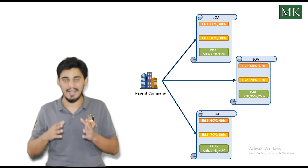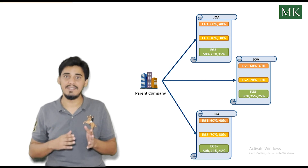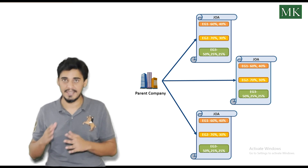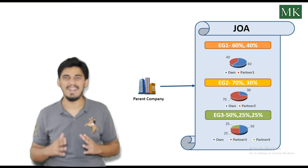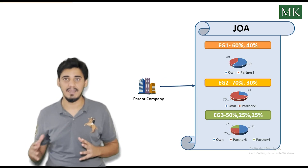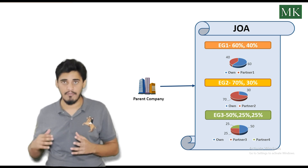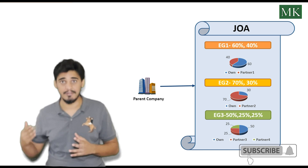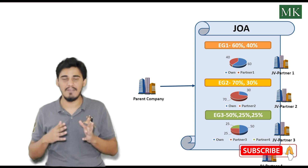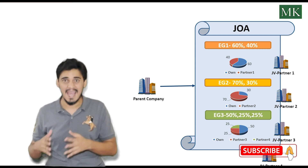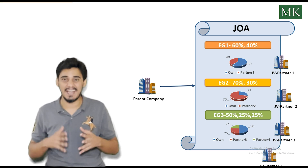To maintain the joint operating agreement details in the system, we create the joint operating agreement master data at the company code level. On this master data, different equity groups are defined for different types of partnership for each phase. Under each equity group, we maintain the joint venture business partner number and their equity share in percentage as per the agreement.